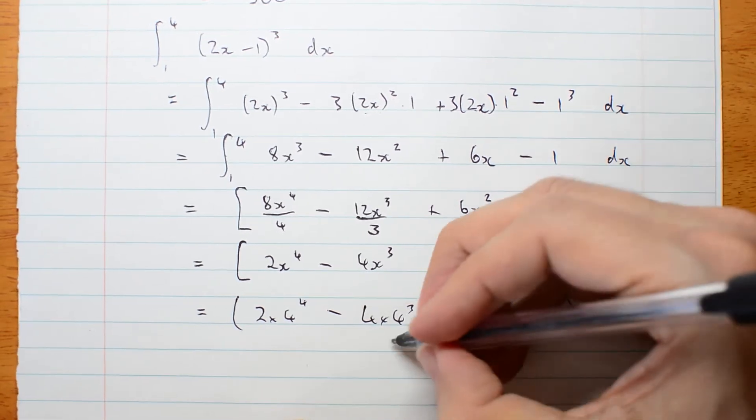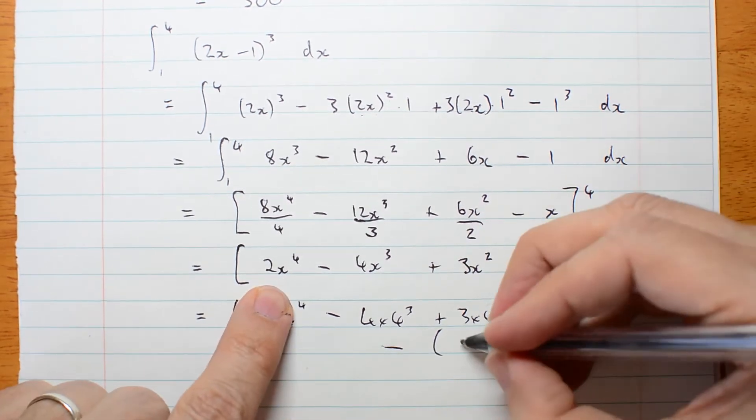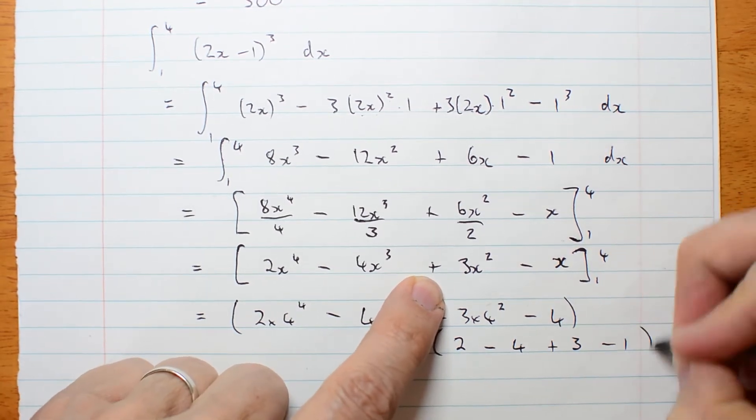back here, x is 1, 2 minus 4 plus 3 minus 1.